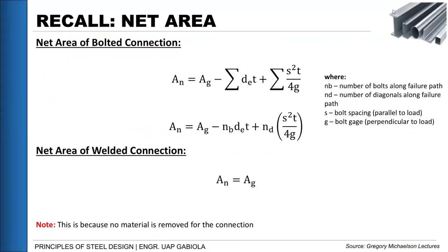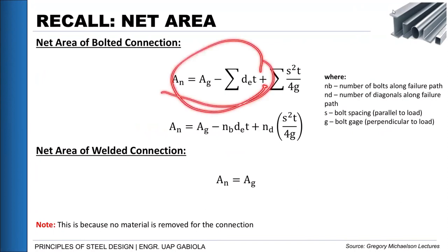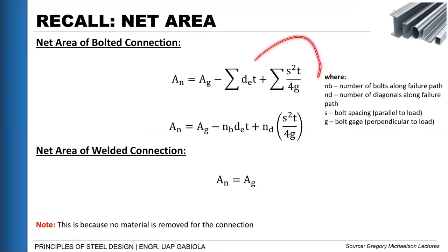We also discussed the concept of net area for bolted and welded connections. For bolted connections with a grid-type pattern, we use a formula with two terms. When a staggered bolt pattern is present, we introduce an additional staggered factor to account for the inclined failure path. If the stagger spacing and gauge are the same for all diagonals, we can multiply by the number of diagonal paths; if not, we calculate each stagger separately.